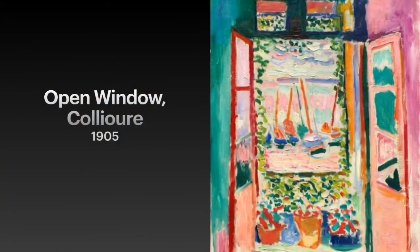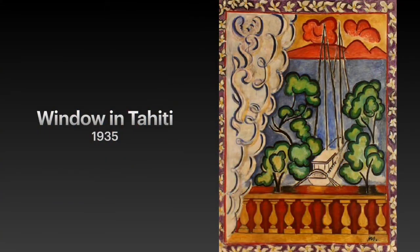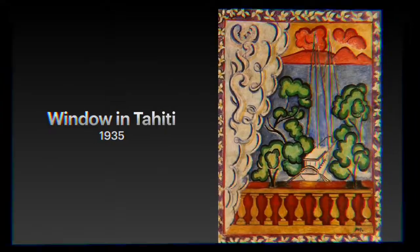This painting is one of Matisse's most well-known artworks. We are looking through an open window — look at the boats, plants, and color he used to paint the walls. This painting just looks so happy to me. This painting is named Window in Tahiti. I love his trees, the swirls on the curtain, and the design on the window frame.